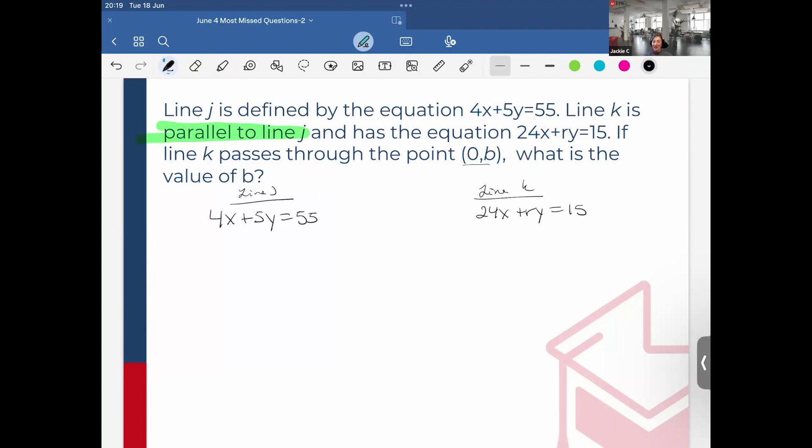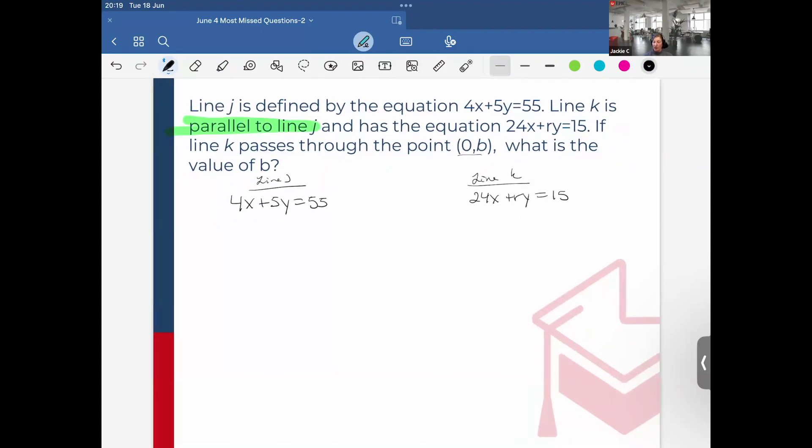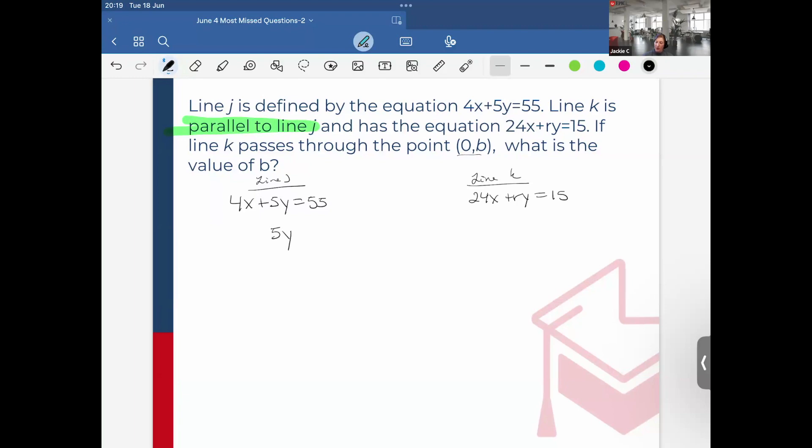So what I always do in these equations is I first rearrange everything in terms of y. So y equals mx plus b. Let's do that. So here, everything put into slope-intercept form, would be negative 4/5 x plus 11. And then let's do the same here. So this would be ry equals negative 24x plus 15. Divide everything by r, so y equals negative 24/r x plus 15/r.